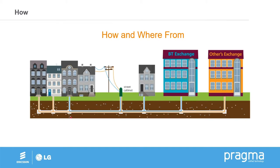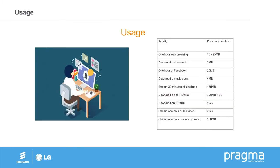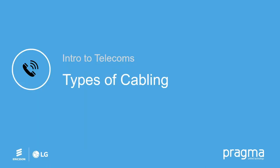One other thing I wanted to give you an idea of was data usage. One hour of web browsing will only use between 10 to 25 megabytes. An hour on Facebook will only use 20 megabytes. Downloading an HD film will use 4 gigabytes. Streaming an hour of music or radio is 150 megabytes. You'll quite often have a customer say, how much data do I need? Most services now are unlimited, but just in case you're working with a customer who doesn't understand what they need to be aware of in terms of data usage, those are a few ideas. That was connectivity — a very basic overview. We're not an ISP, so I don't want to go into too much detail.